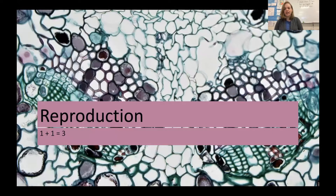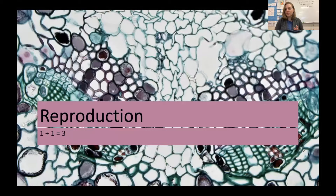Today we're going to talk about reproduction. Here's a little joke: one plus one equals three. I'm not really that bad at math, but hopefully you get what we're trying to say. One individual's DNA plus another individual's DNA equals three unique individual's DNA.